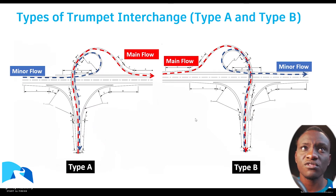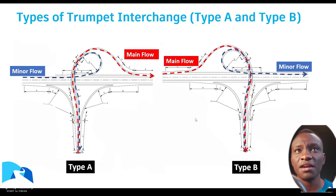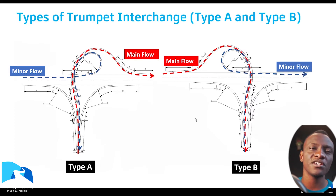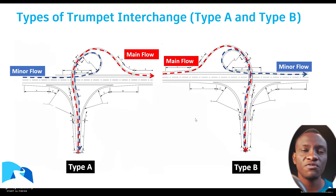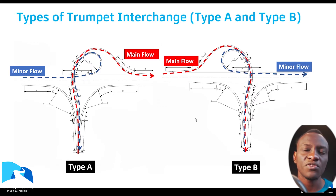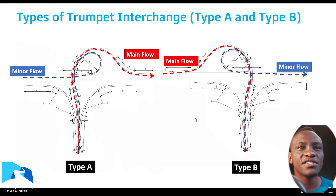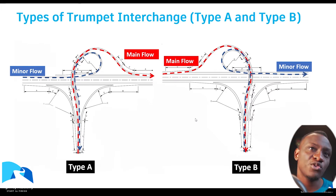There are two types of trumpet interchange: Type A and Type B. In Type A, there are two layouts which are simply mirror images of each other. The main consideration is where the semi-directional ramp is facing. The most influential factor is understanding the traffic coming from the road that is terminating into the main motorway.